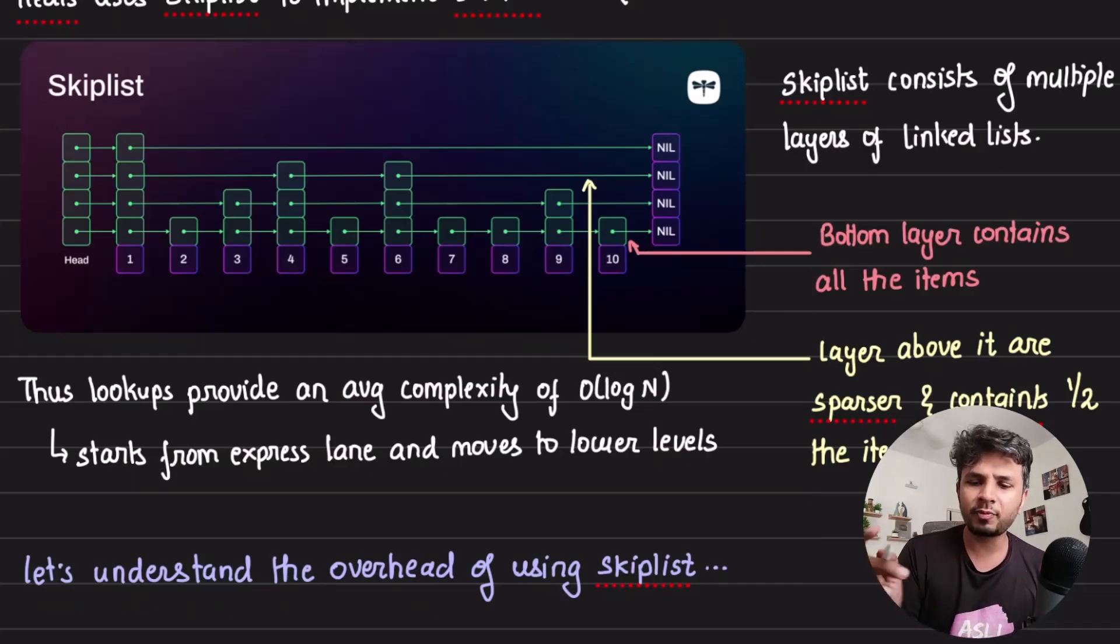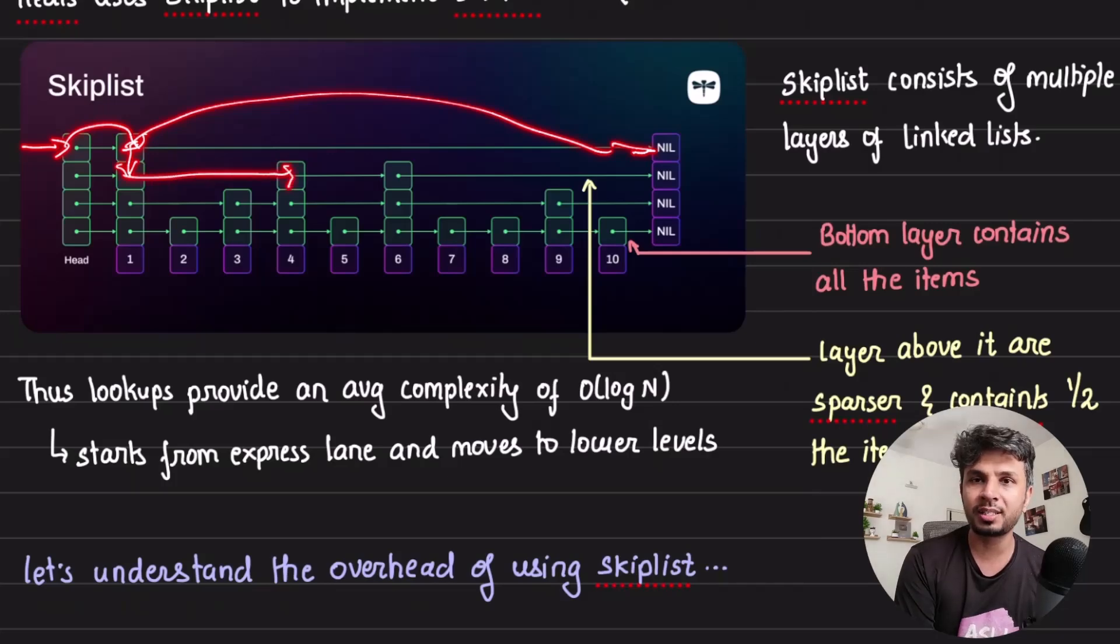For example, if I'm looking for element 7, I start with the express lane. I reach one element, but haven't reached 7, so I go to the layer bottom. 4 is less than 7, then 6 is less than 7. Since the next is 9, which is more than 7, I go to the bottom layer and come back to 6, then reach 7.